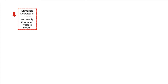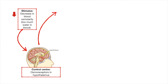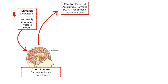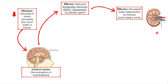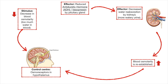Let's look at the opposite scenario. If instead we drank way too much water, our blood osmolarity is too low and there's too much dilution — too much blood volume. This can lead to hypertension or high blood pressure. Once again, the control center is in the hypothalamus, and in this case it's going to reduce the production of antidiuretic hormone, leading to decreased water reabsorption and more urine being produced. Blood osmolarity will then be re-established — it's a negative feedback mechanism.